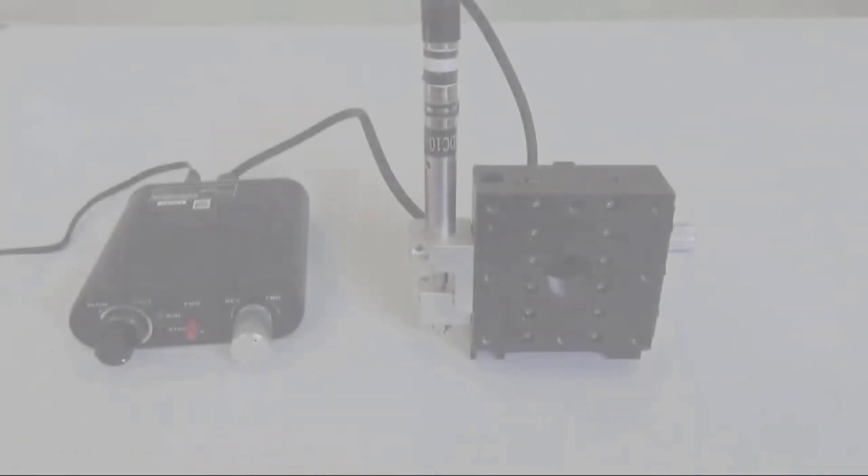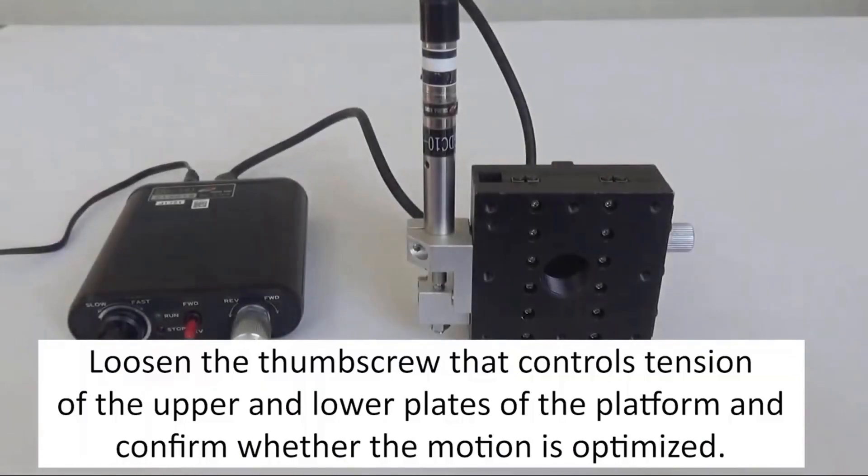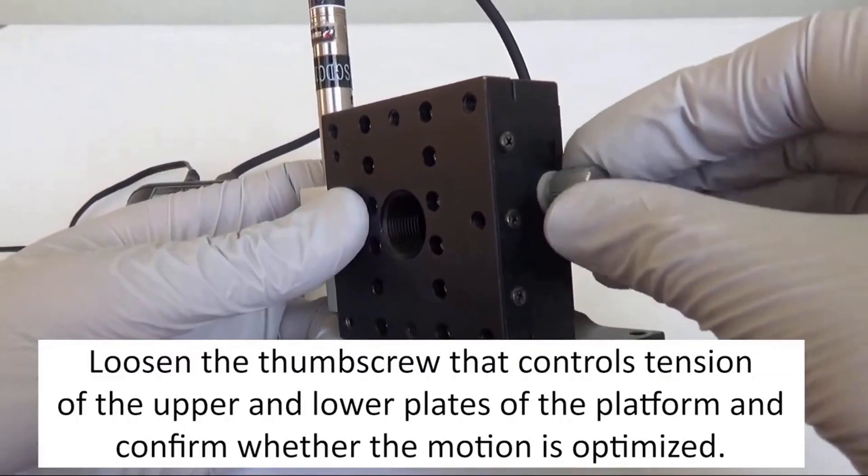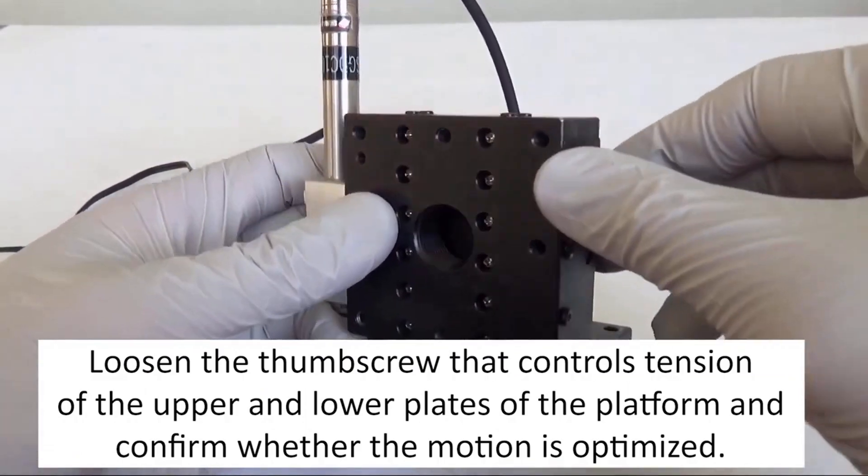Step three: Once the motor is securely in place, use the thumbscrew to unlock the upper and lower plates of the translation stage and confirm whether it moves freely.